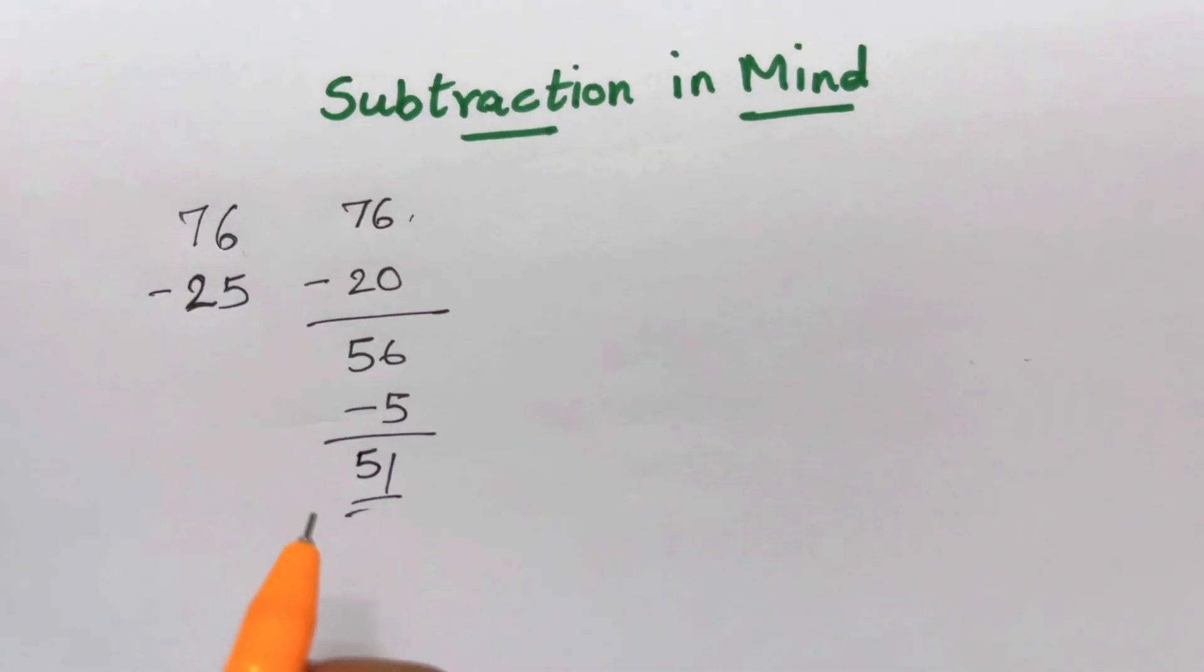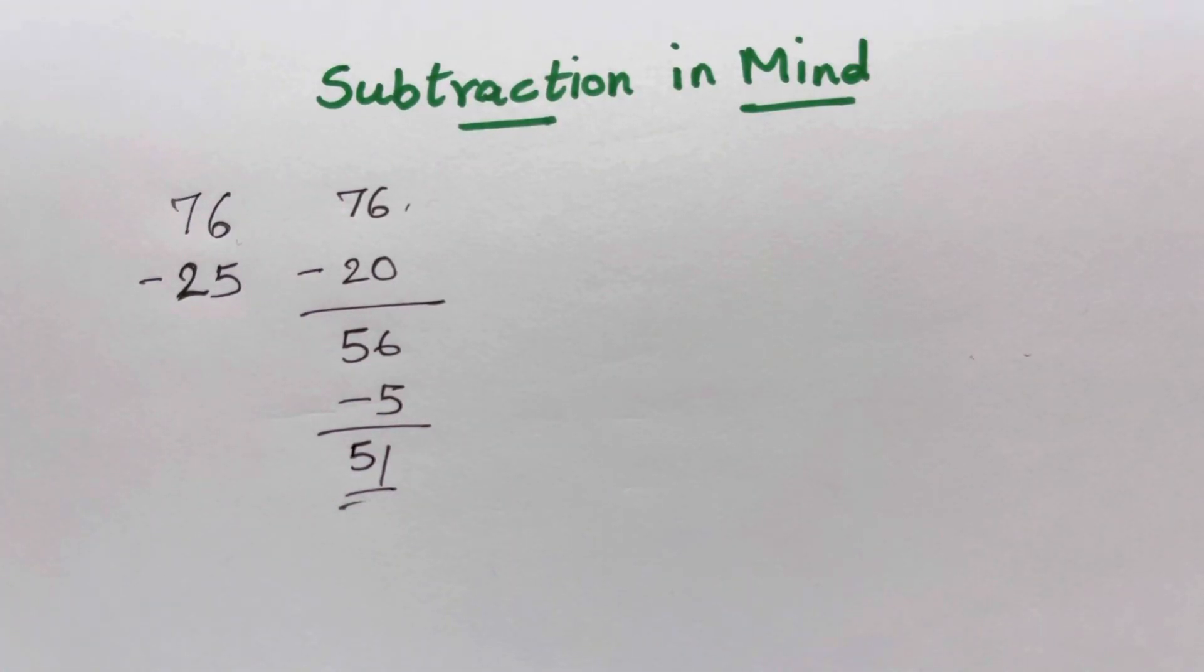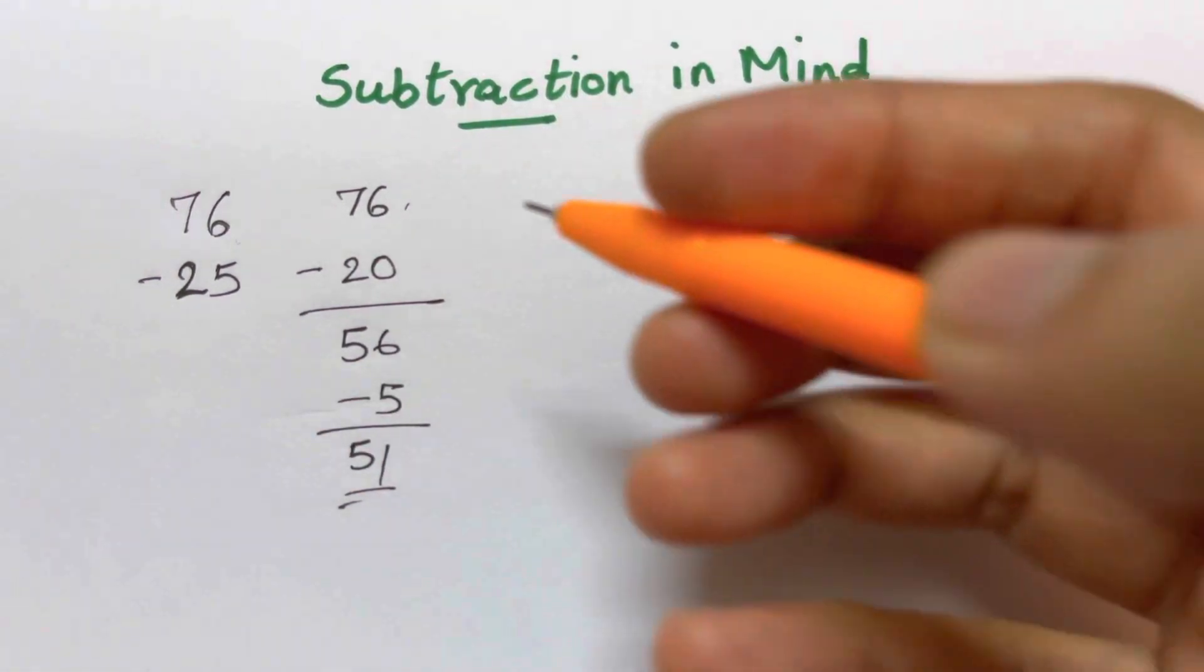This is what you're going to do it in mind quickly. 76 minus 20, 56. 56 minus 5, 51. And then there's another way of doing that.